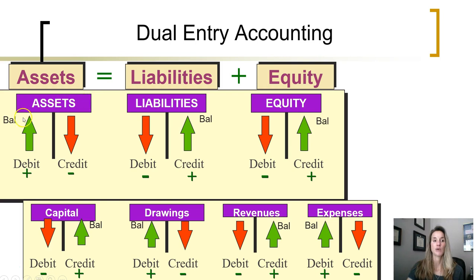Assets always have a balance on the debit side of the equation, which means that an asset is increased with a debit to cause the balance to increase, and it is decreased with a credit.